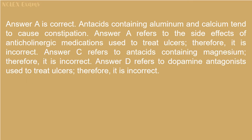Answer A is correct. Antacids containing aluminum and calcium tend to cause constipation. Answer B refers to the side effects of anticholinergic medications used to treat ulcers, therefore it is incorrect. Answer C refers to antacids containing magnesium, therefore it is incorrect. Answer D refers to dopamine antagonists used to treat ulcers, therefore it is incorrect.